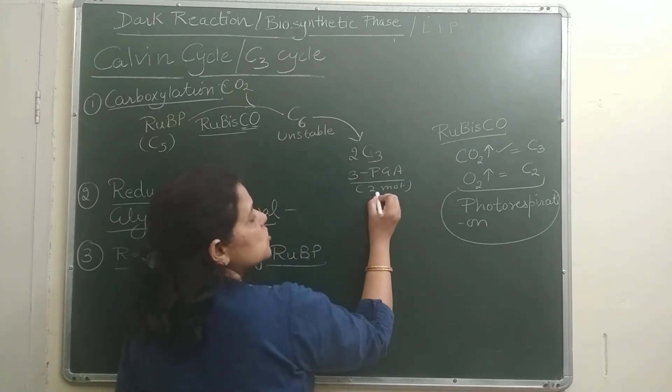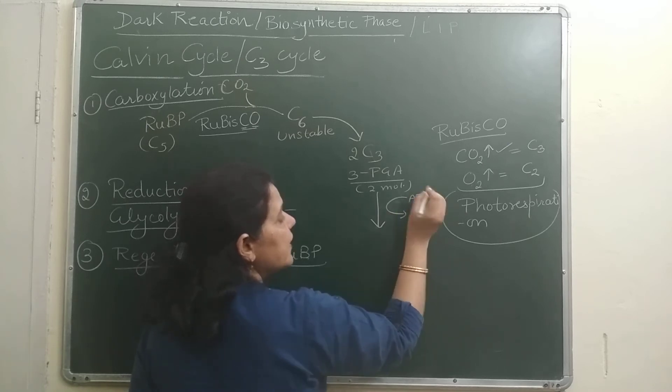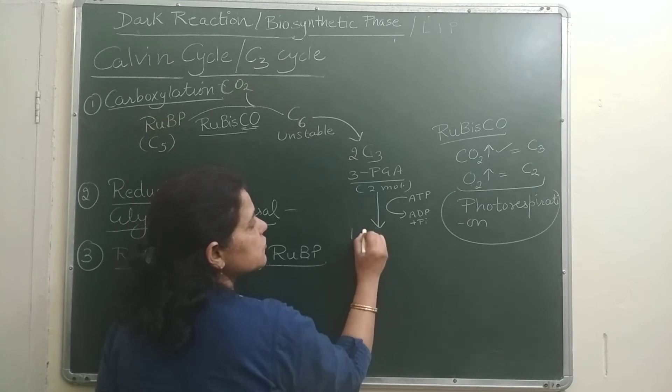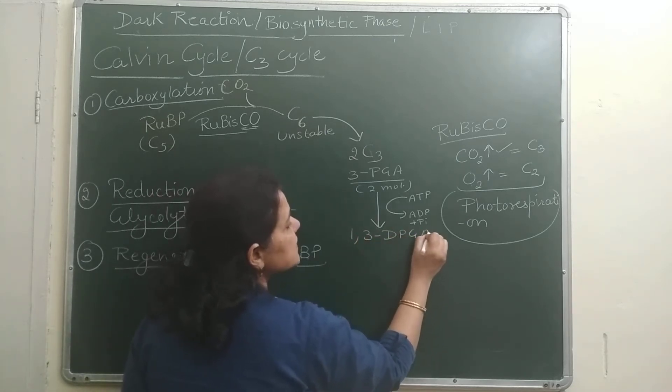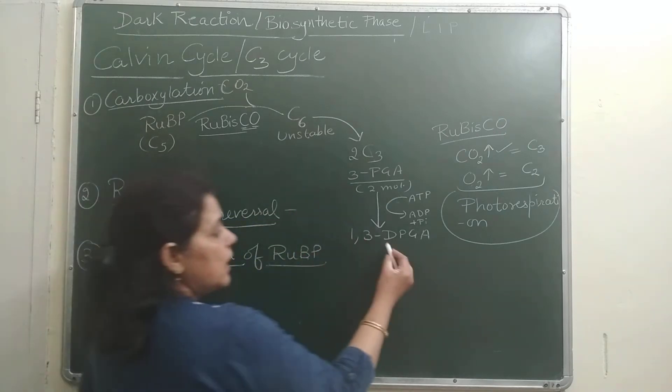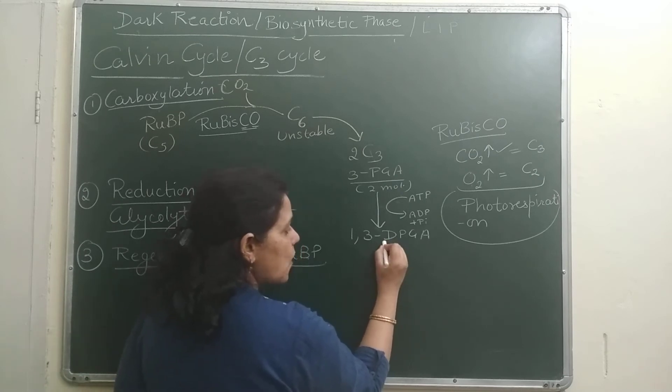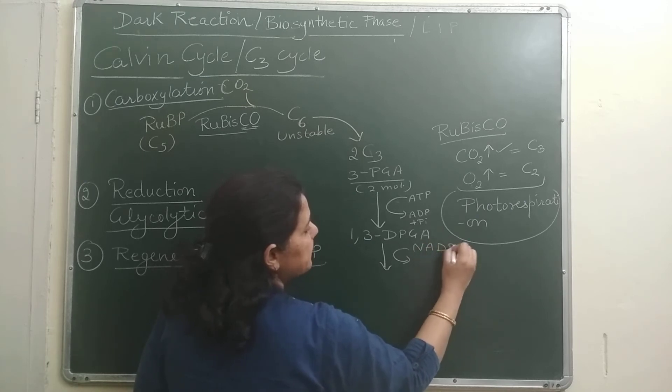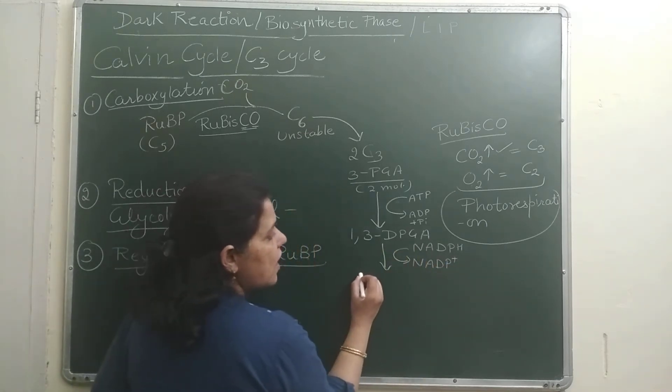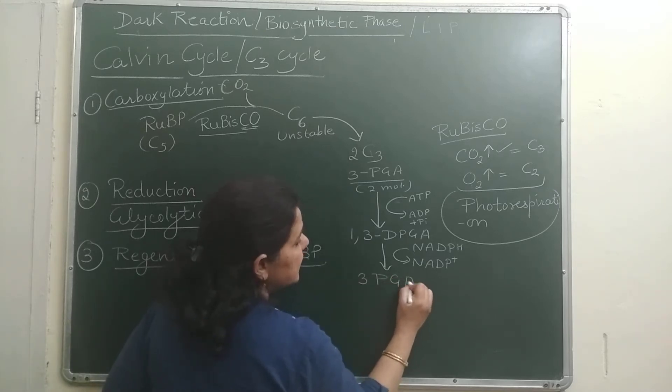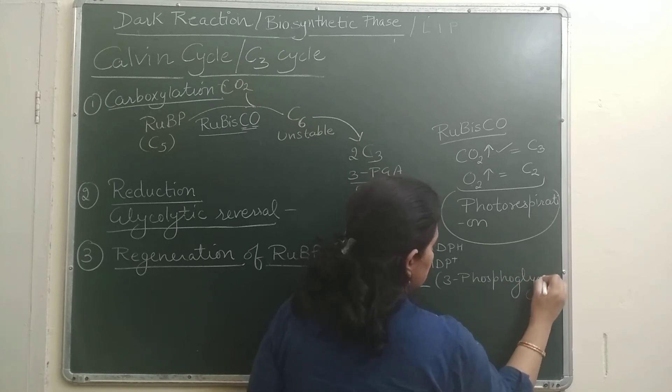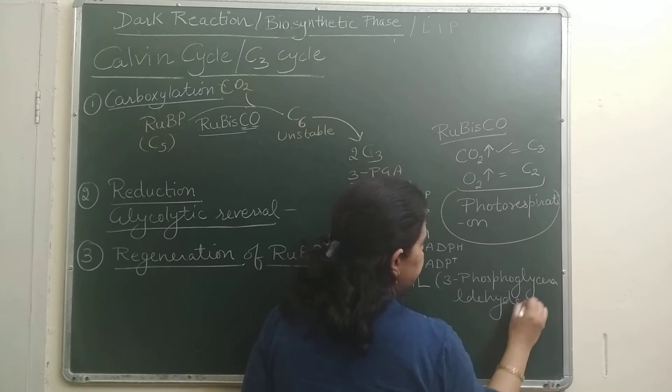We will be discussing photorespiration later on. This is a wasteful process. This is not good for plants. They don't want oxygenation, their energy is wasted. They want to run C3 cycle to make food. So RuBisCO is a very important enzyme. RuBP will combine to help carboxylation of RuBP. This is the most important enzyme here. C6 is unstable, it will split into two C3 compounds, which is two molecules of 3-phosphoglyceric acid. Then what will happen? This 3-PGA will combine with an ATP, which was made in light reaction. ADP and inorganic phosphate will release. ATP is used and it will become 1,3-bisphosphoglyceric acid. And then what will happen? This is glycolytic reversal step started. 1,3-bisphosphoglyceric acid, here what will happen? NADPH, which we get in light reaction, is used here and reduced to create 3-phosphoglyceraldehyde, 3-PGAL.